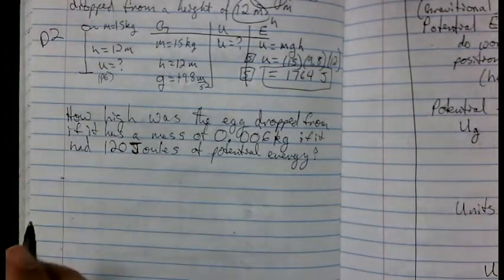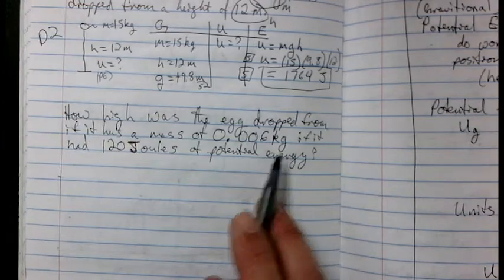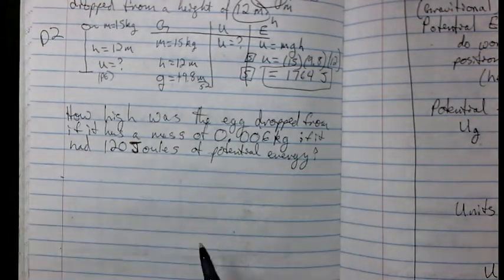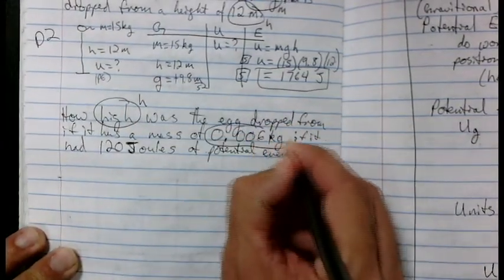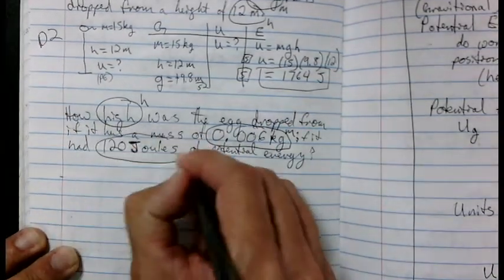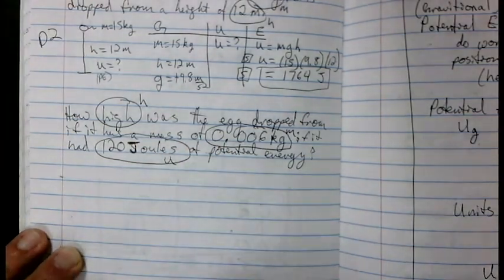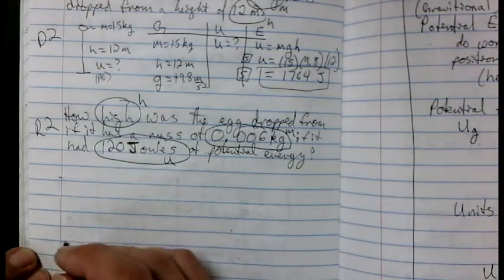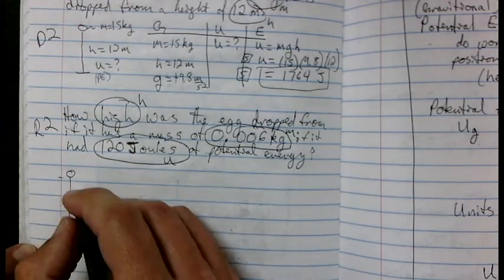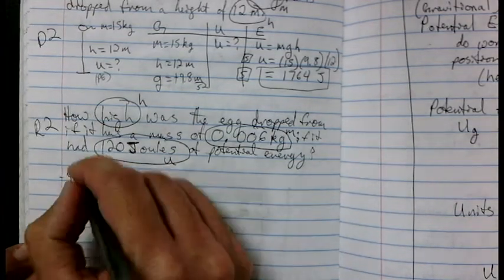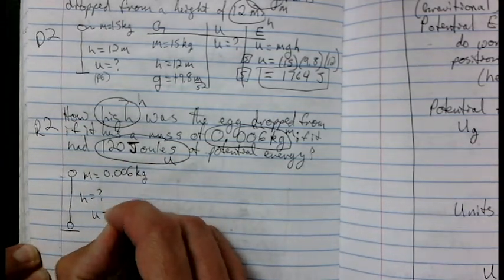How high was the egg dropped from if it has a mass of 0.006 kilograms, if it had 120 joules of potential energy? So how high, which is the height, was the egg dropped from if it has a mass of 0.006 kilograms? That's a mass. If it had 120 joules of potential energy? So U. So I've read it twice. I've marked it.